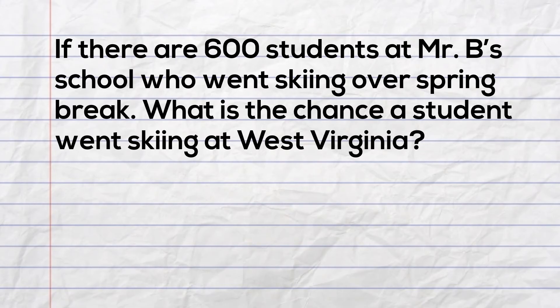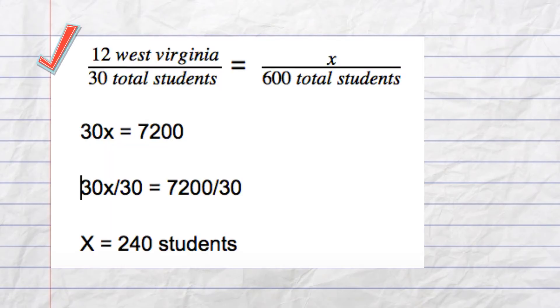In order to solve this, we will set up a proportion. We will have 12 over 30, the 12 being the students that went to West Virginia, 30 equals total students. Remember you need to set up the other fraction the same. X is what we're trying to find, and then 600 is the total number of students. Notice that both sides of the fractions are the same.